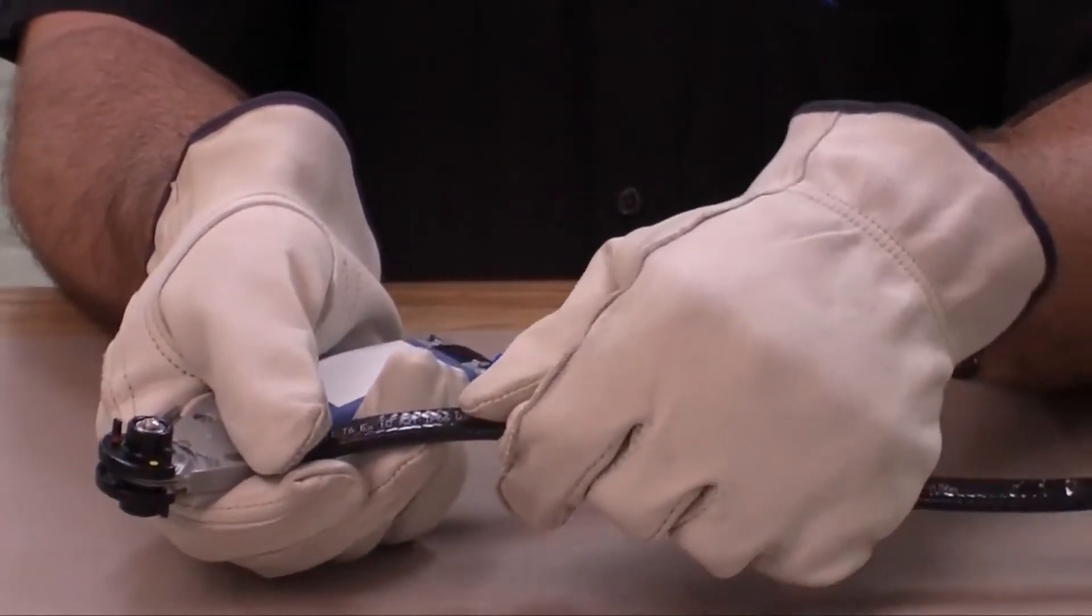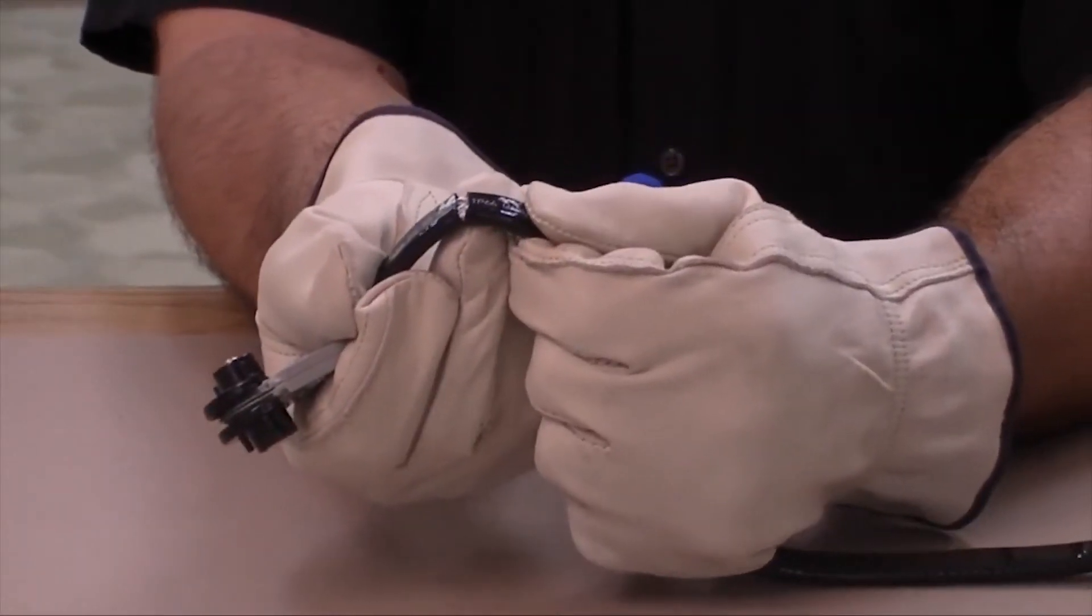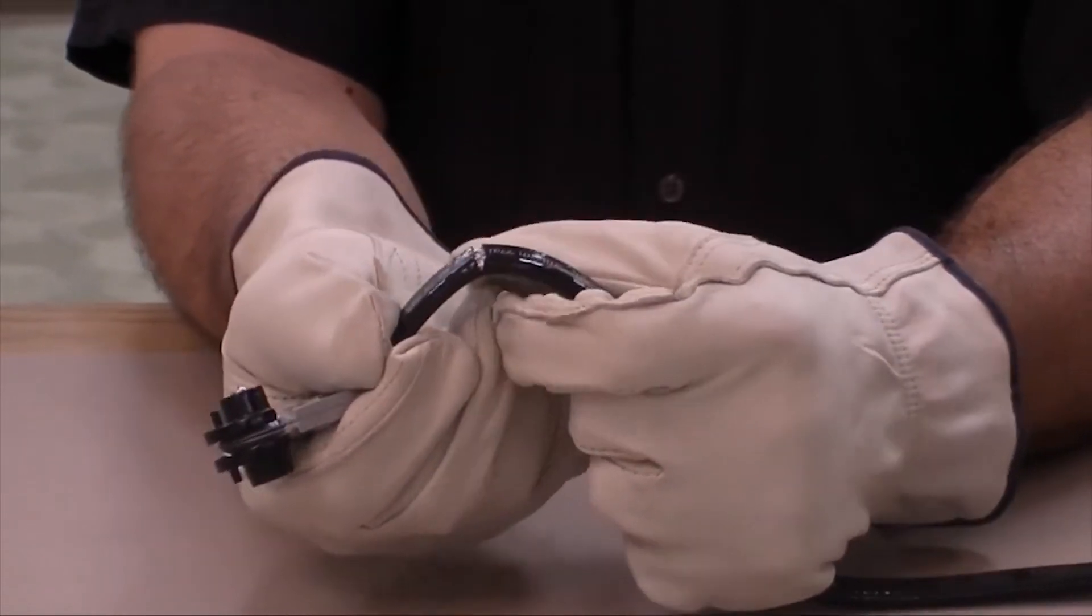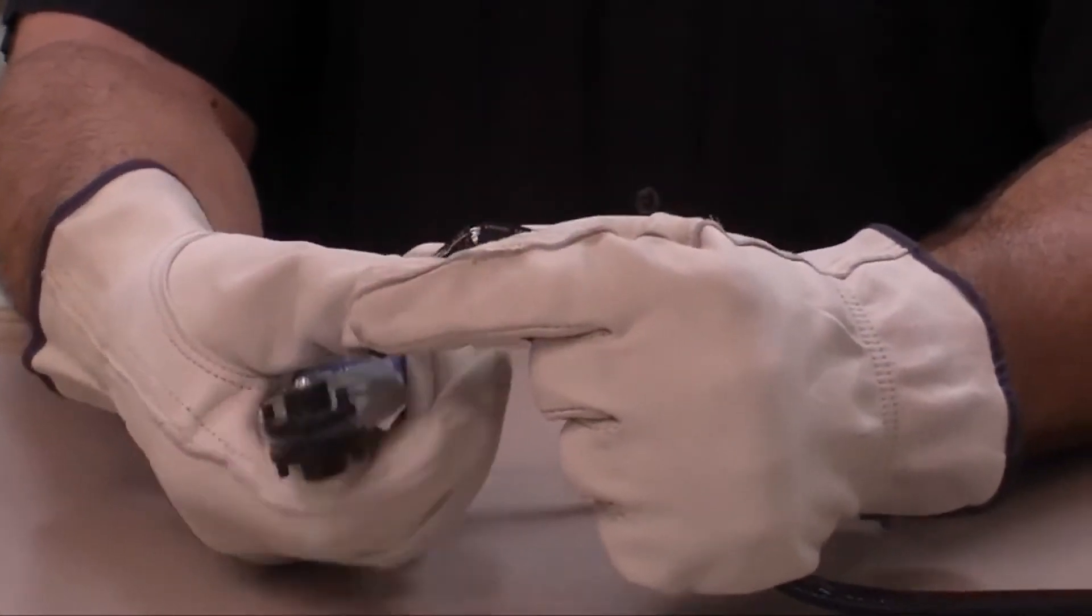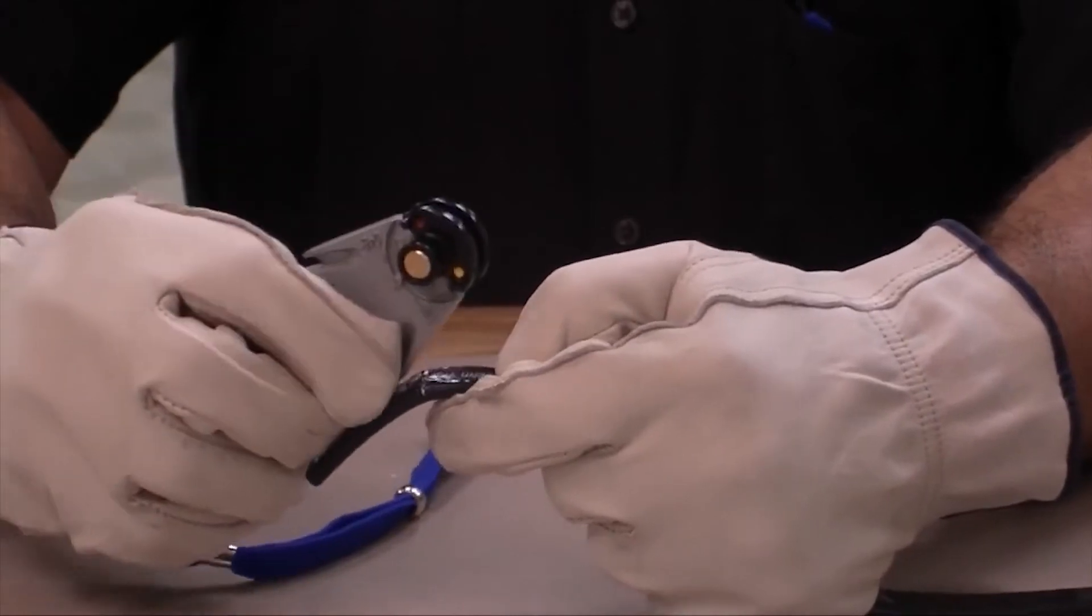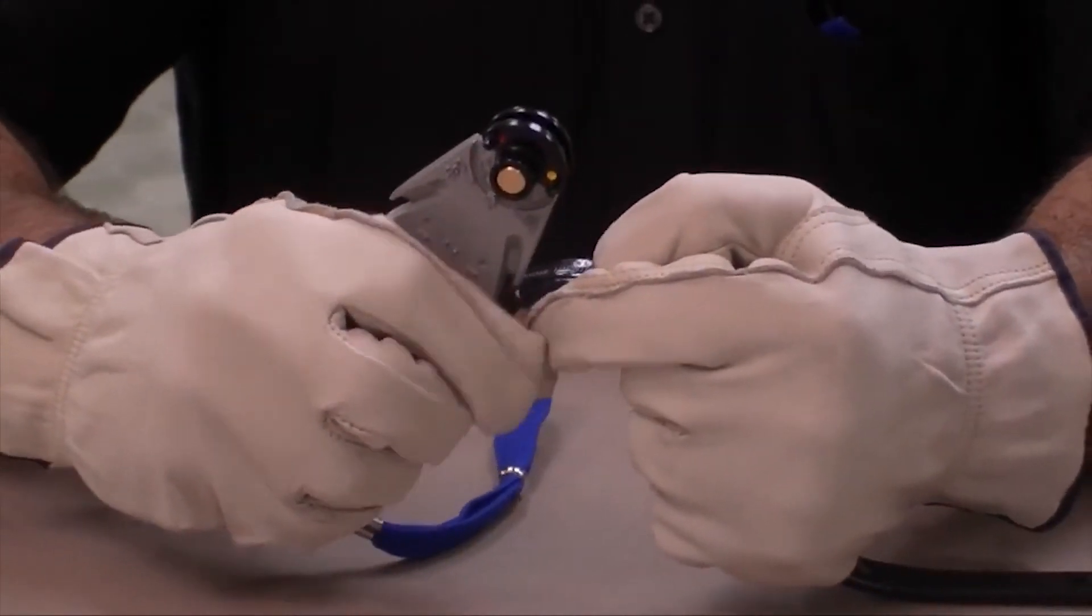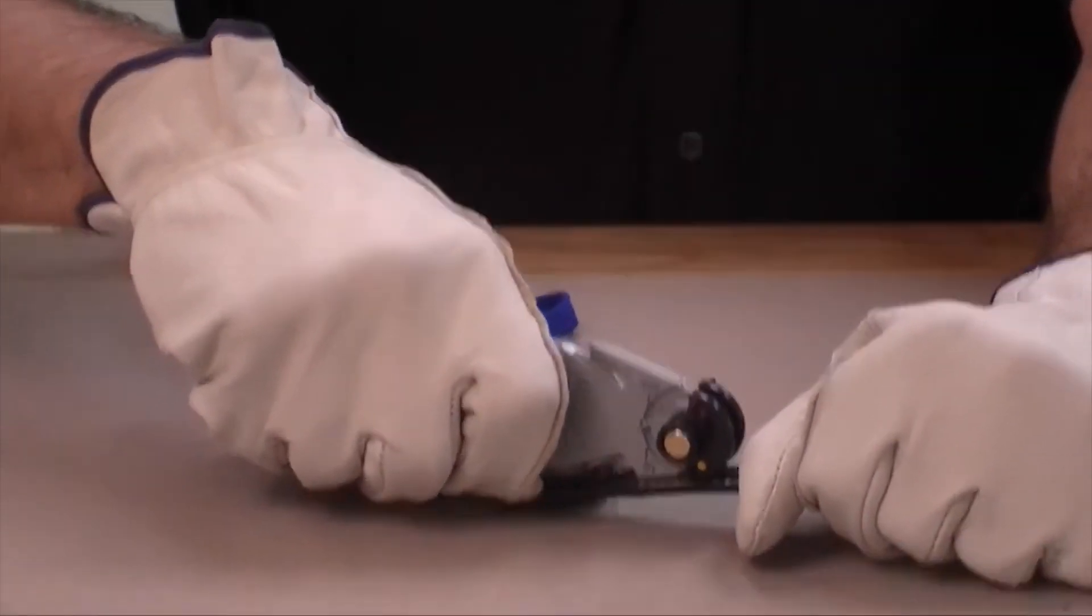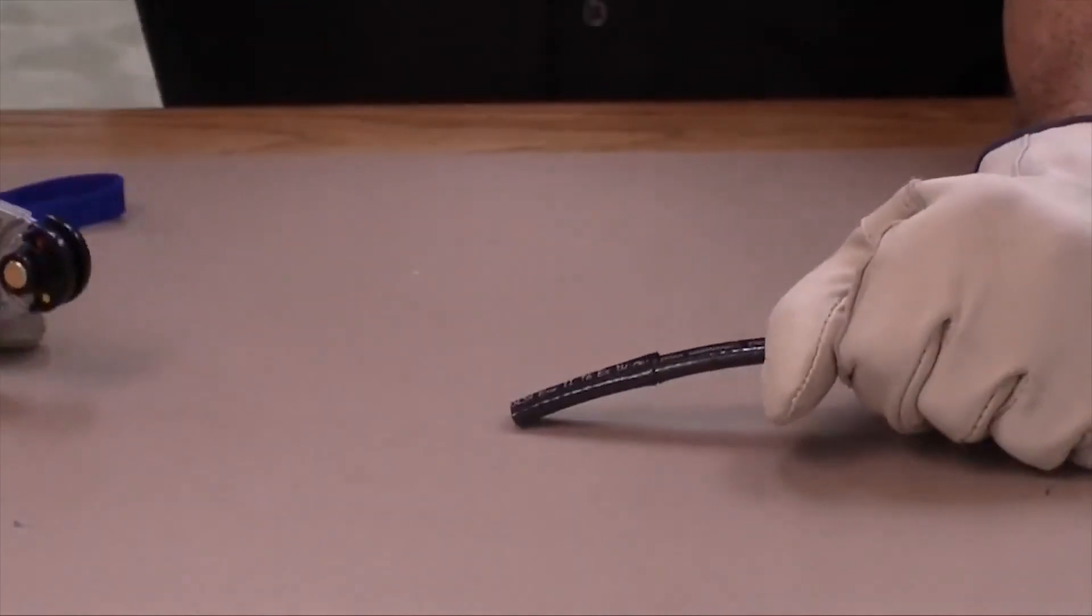Step two: bend the heating cable at the score to separate the jacket. Insert the jacket's slitting tip under the cable jacket. Pull the stripping tool towards the end of the heating cable to split the jacket.